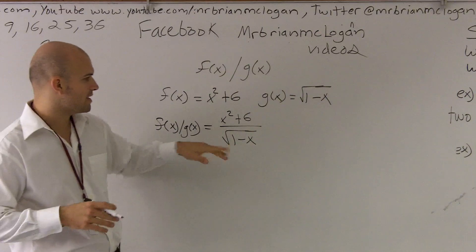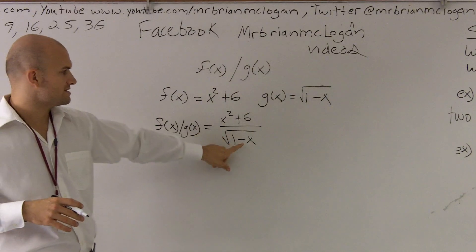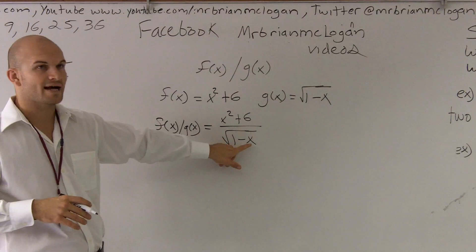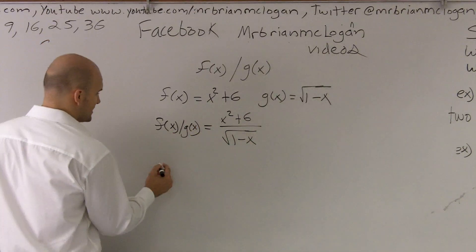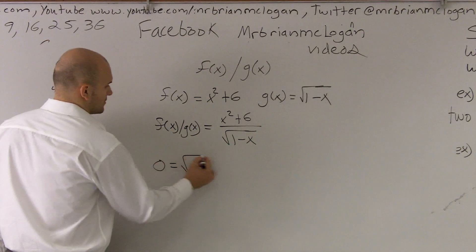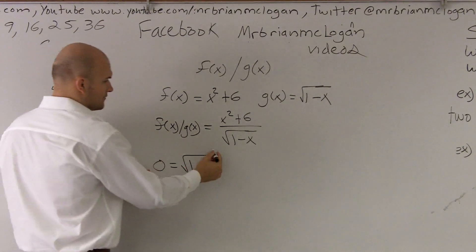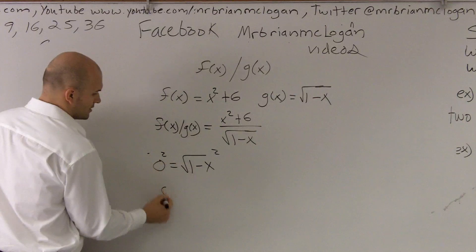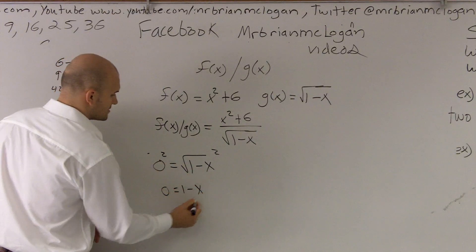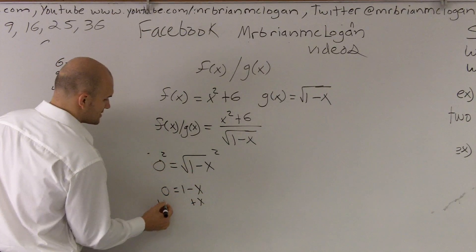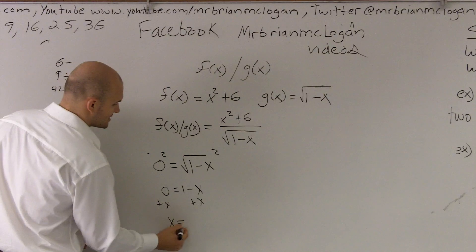So what we need to do for this problem is, first of all, when is this going to become 0? Well, if I had x equal 1, well actually, when is it equal 0? So when does this equal 0? Well, if you square both sides, 0 equals 1 minus x. Add the x on both sides. x is equal to 1.